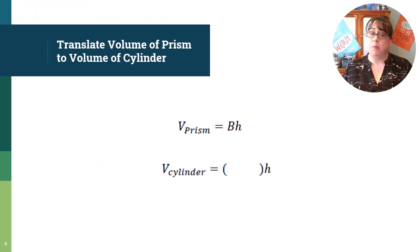So how does that translate the volume of a prism to the volume of a cylinder? Well, the volume of the prism is the base area times the height, and so the base area on a cylinder is a circle. The circular area we represent as B equals πr², so we can write the volume of a cylinder as substituting the capital B with πr². So we can write the volume of a cylinder as πr²h.